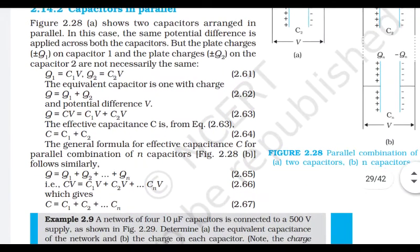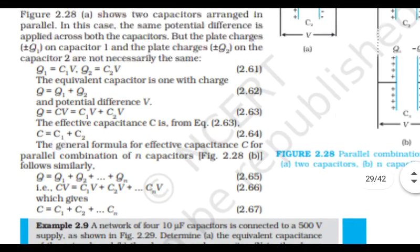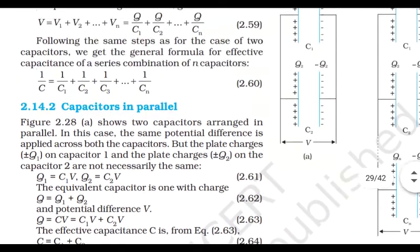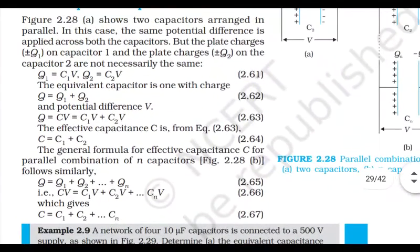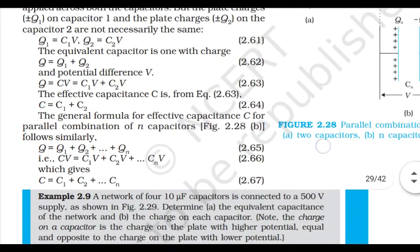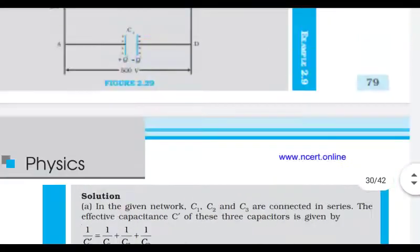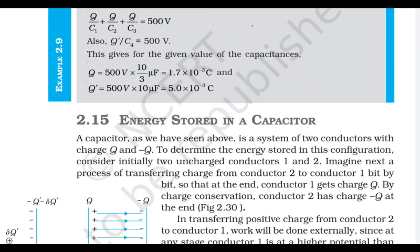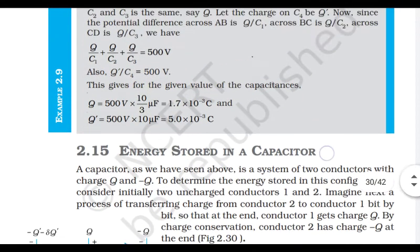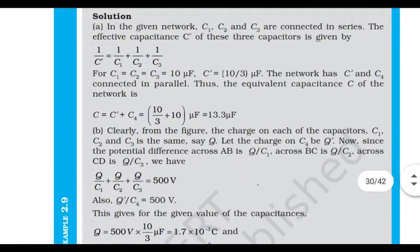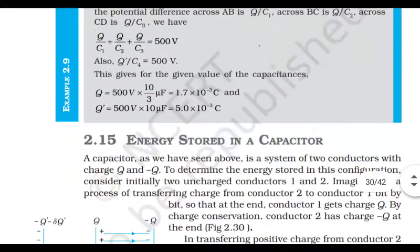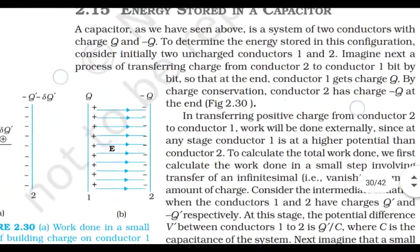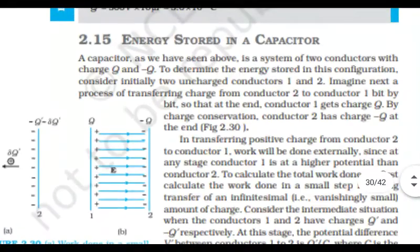When capacitors are connected in parallel, the total charge Q = Q₁ + Q₂. Substituting C₁V and C₂V: C = C₁ + C₂. So in series: total potential adds; in parallel: total charge adds. In series, 1/C = 1/C₁ + 1/C₂; in parallel, C = C₁ + C₂.